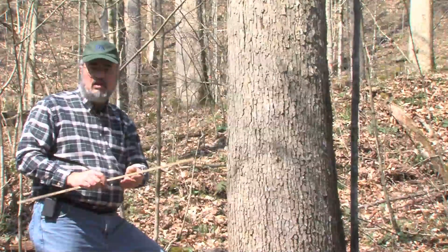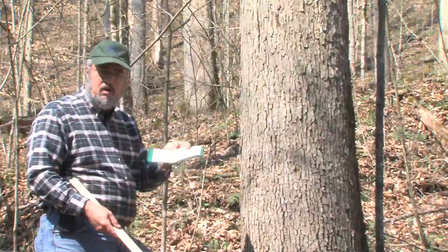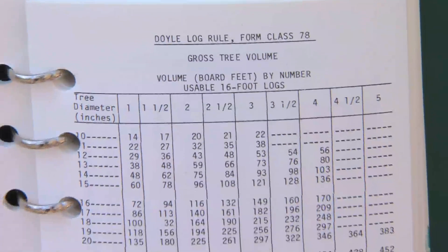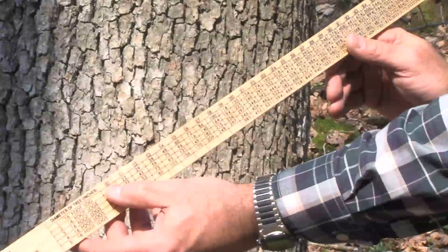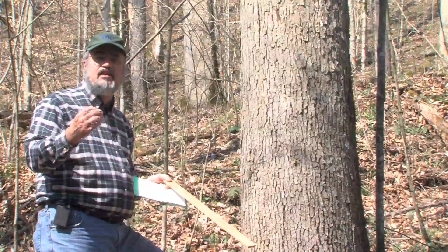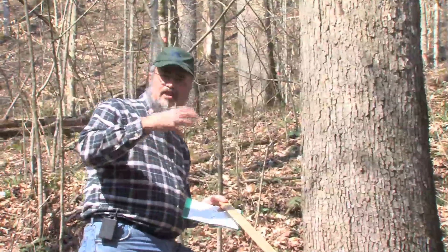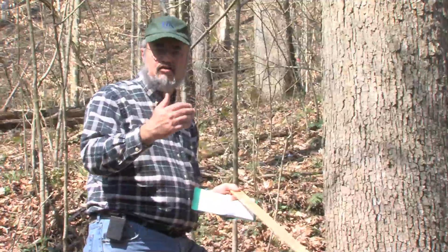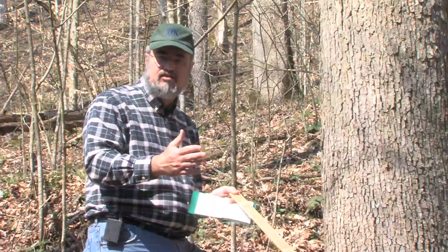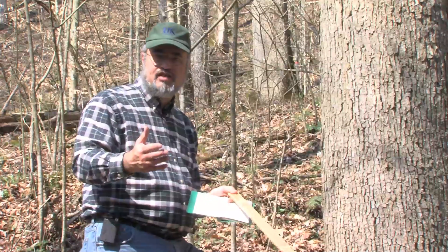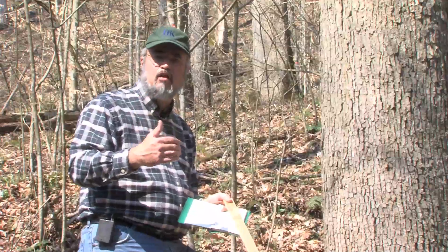Once you have those two measures, you can use tables called volume tables. Some are printed out on paper and some are contained on a tree scale stick — there's an actual table on here. There are different ways of estimating that volume, or different formulas and tables used. Two of the most common in this region of the U.S. are the International quarter-inch scale and something called the Doyle scale. Depending upon where you're at and how your markets work, you would use one or the other. For the example here, we'll use the Doyle scale.